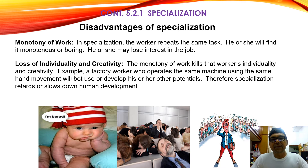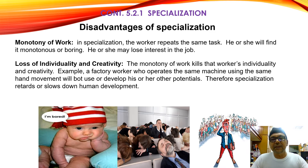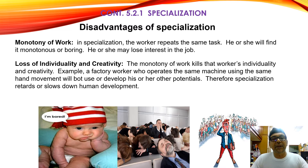Disadvantage: because it becomes monotony of work. In specialization, the worker repeats the same work every day until he retires from the factory, so he will usually find it monotonous or boring. He will usually lose interest in the job — some people, because of specialization, lose interest and even change to other jobs. You can see the benefits outweigh the disadvantages, but we also hear some disadvantages. Loss of individual creativity: because monotony of work means the worker cannot develop creativity. It is just repetitive. For example, a factory worker who operates the same machine using the same hand movement will not use or develop his or her other potential. Therefore, specialization retards or slows down human development. Because of specialization, people don't think, never use their creative mind.